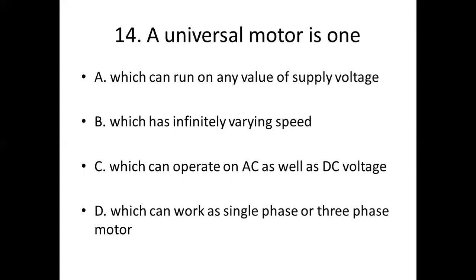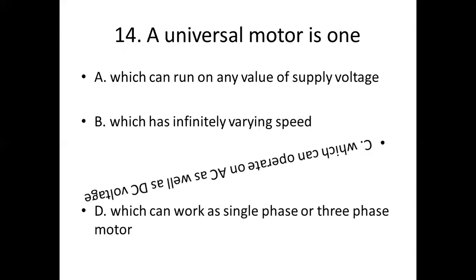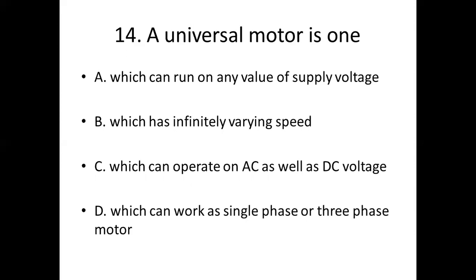Fourteenth bit. A universal motor is one. Option A: Which can run on any value of supply voltage. Option B: Which has infinitely varying speed. Option C: Which can operate on AC as well as DC voltage. Option D: Which can work as single phase or three phase motor. Answer: Option C. Which can operate on AC as well as DC voltage.